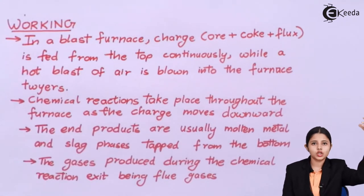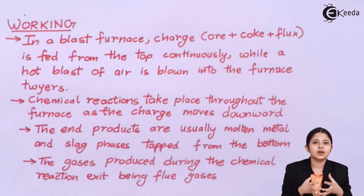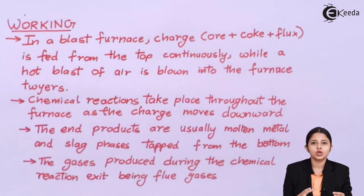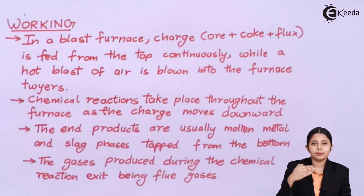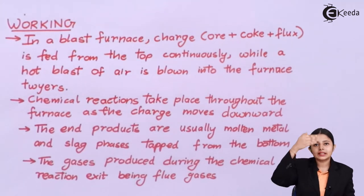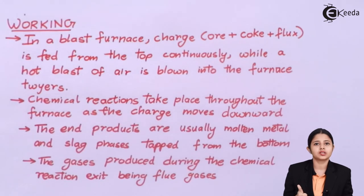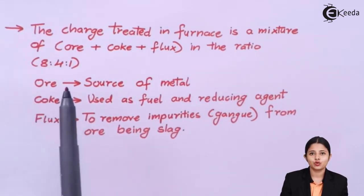Working: In a blast furnace, the charge — which consists of the ore, the coke, and the flux — is fed from the top. Coke is coal, which helps in combustion. The flux helps in removing the gangue, forming slag. From the bottom, there is a blast of hot air happening through the furnace tuyeres. As the charge moves downward, chemical reactions keep taking place at different temperatures. Different gases are evolved and come out. Once the charge passes through the entire blast furnace, only two things remain: the molten metal and the slag. Both are removed through holes present in the bottom. The charge mixture ratio is ore to coke to flux = 8:4:1.